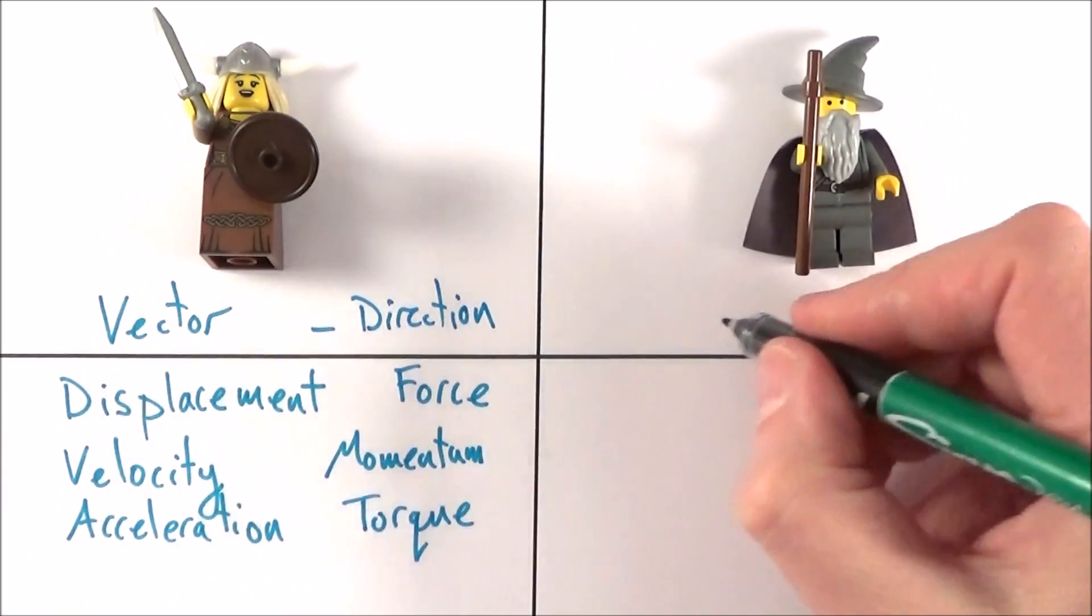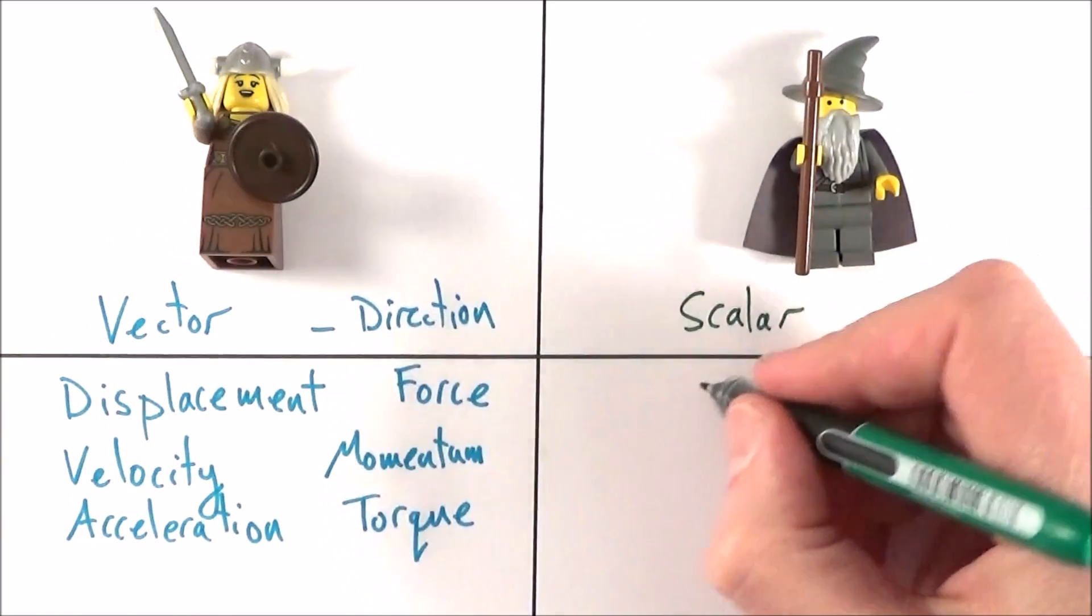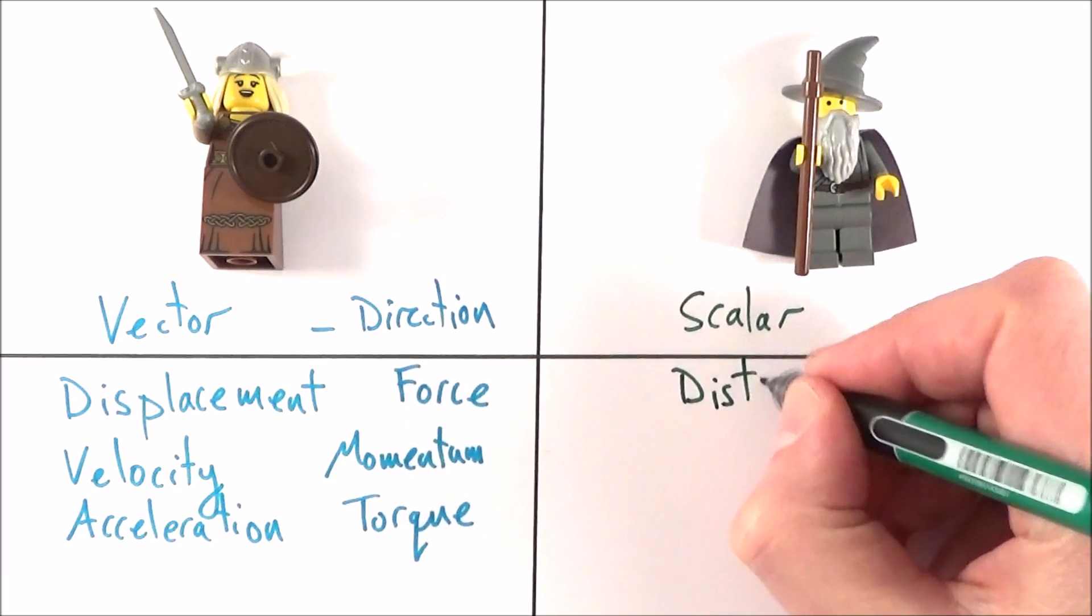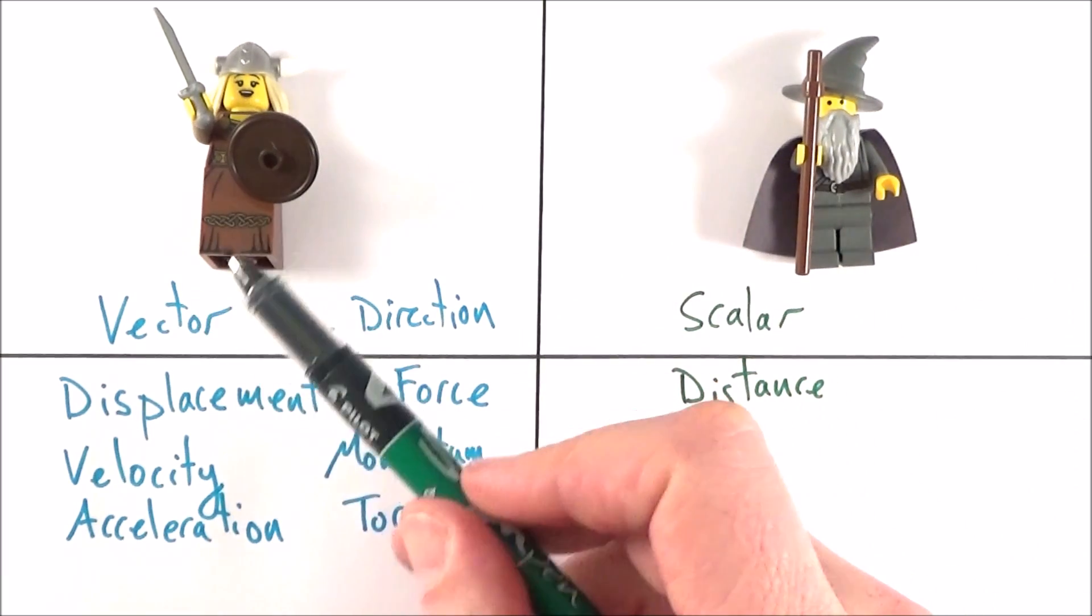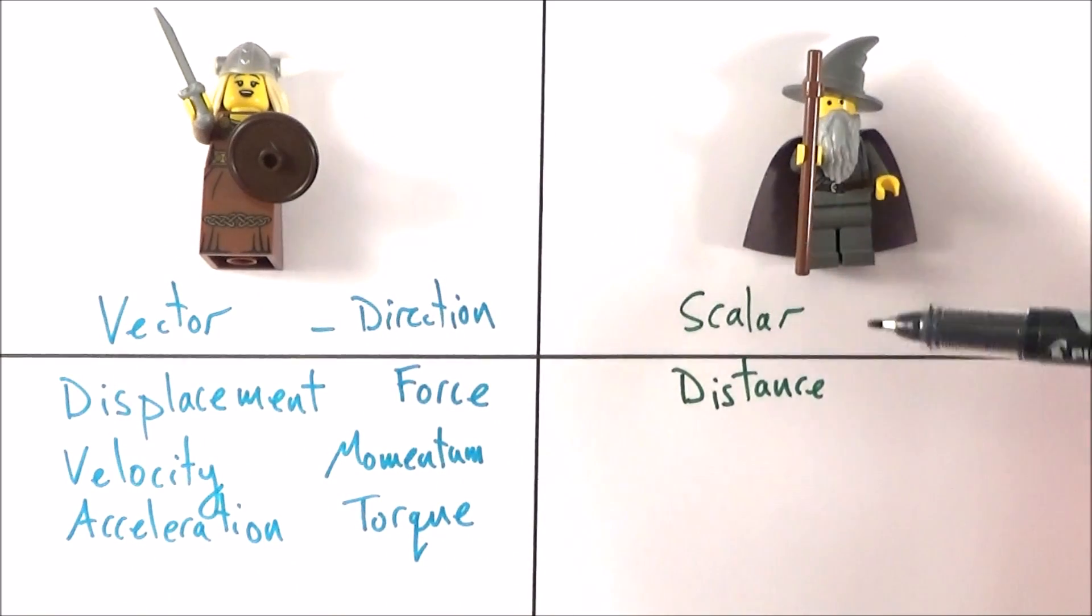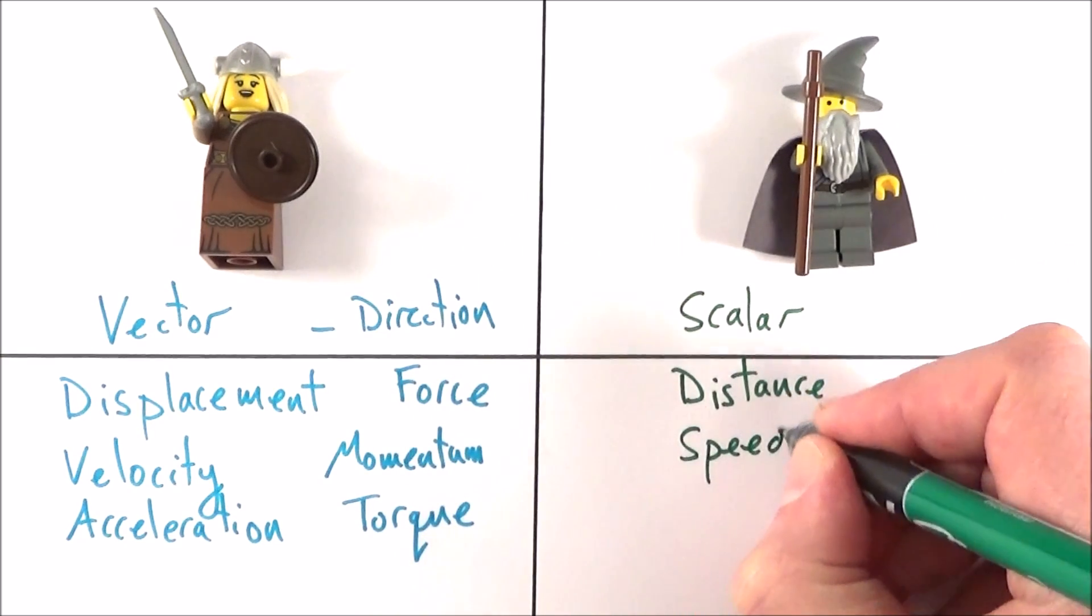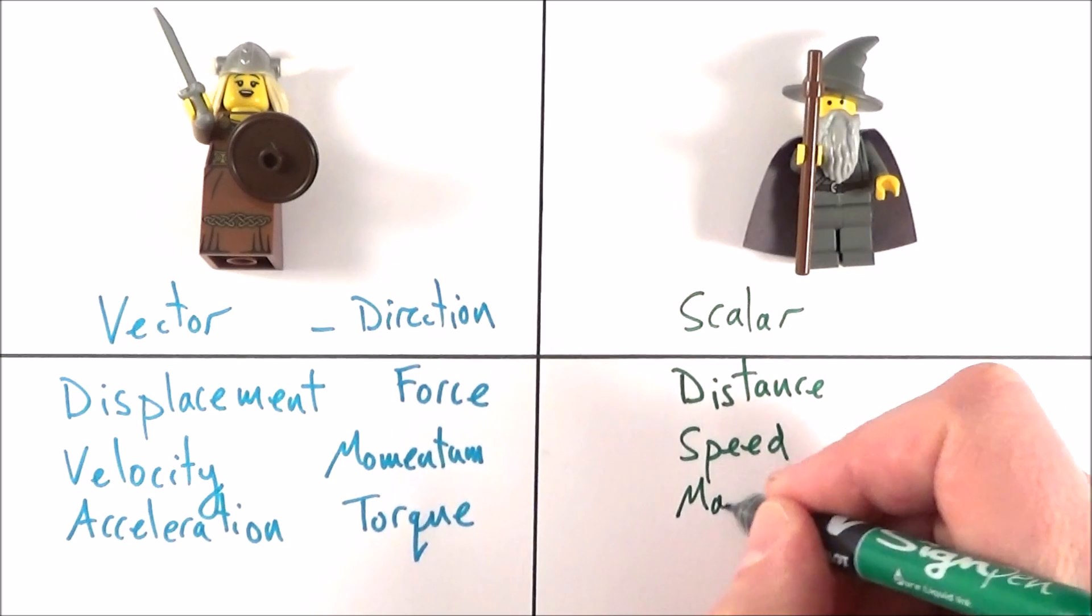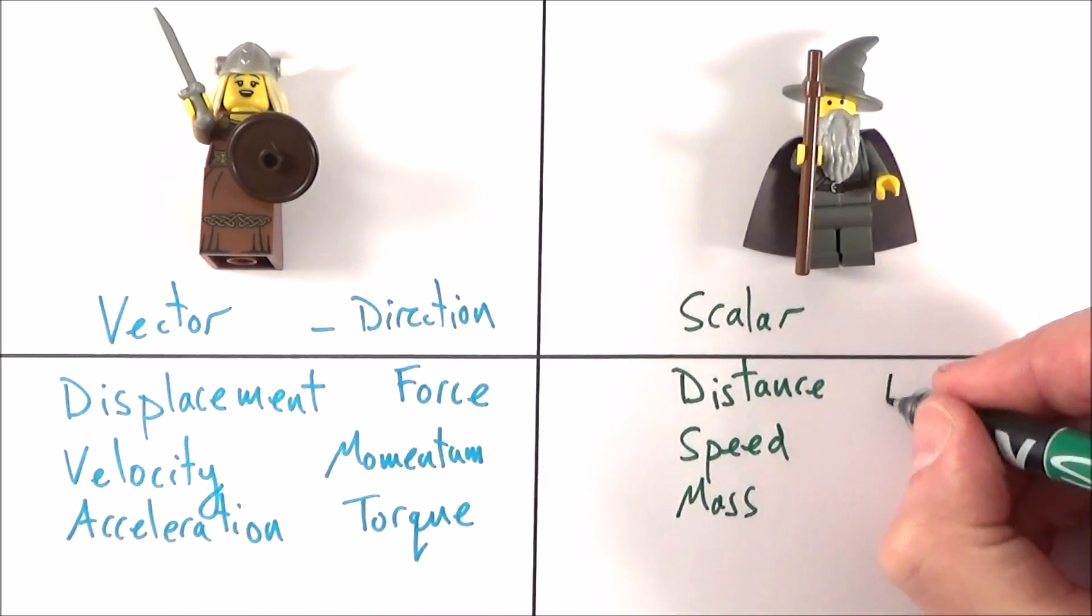When it comes to scalar quantities that only depend upon the amount of something and the direction is not important, we might think about the distance. We thought about the direct distance from A to B as the crow flies that the Viking took, whereas the total distance that Gandalf traveled was quite important. We can think about the speed or the rate of change of distance. Also mass, it doesn't matter, you don't have 10 kilograms to the left and 10 kilograms to the right. We've got energy.